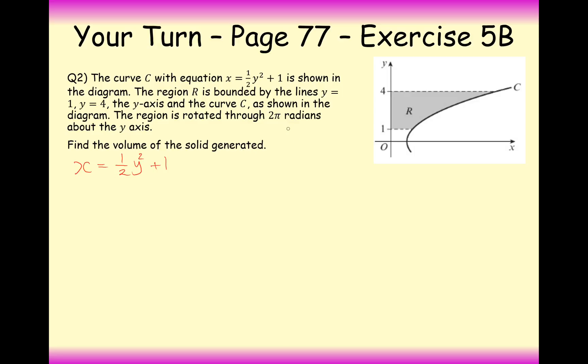Here we have the formula which is integrate between b and a of x squared dy. And even in this question here it's given the formula in terms of x. So all that's left for us to do here is to substitute in the boundaries of 4 and 1.